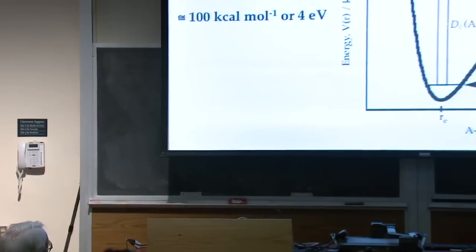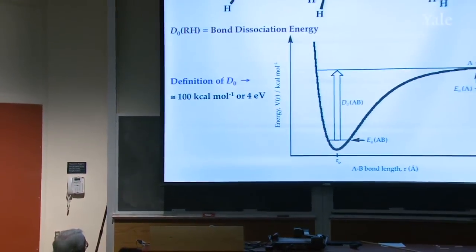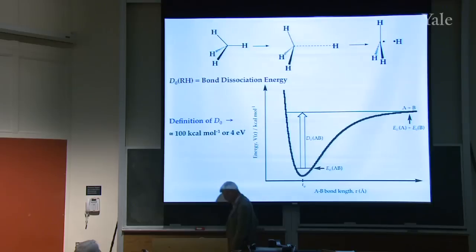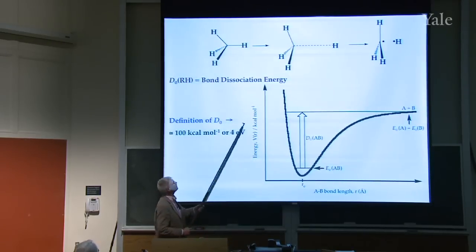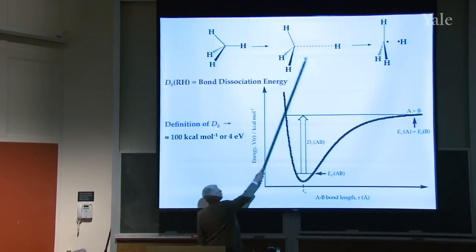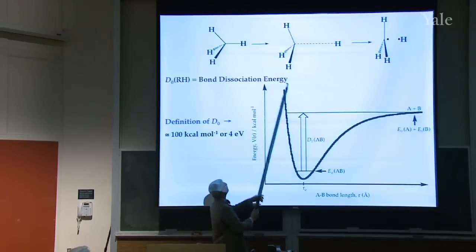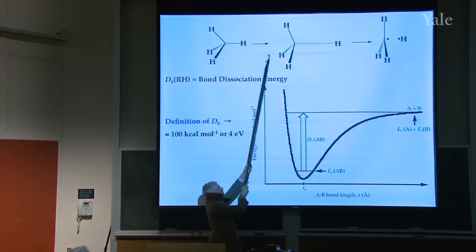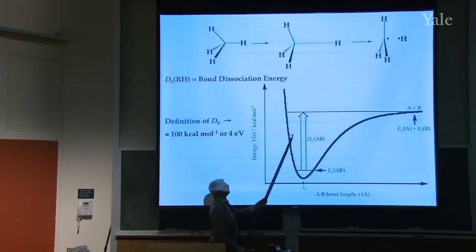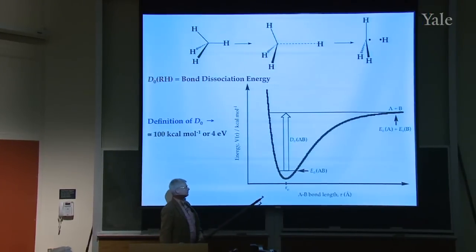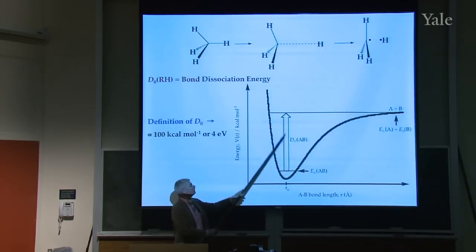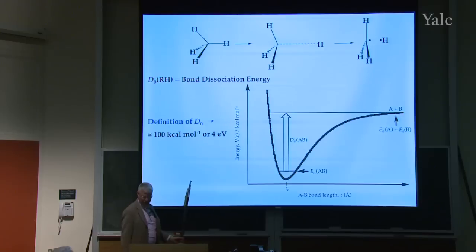If you have methane and you want to measure the bond energy, I literally want to reach in and measure the energy it would take to grab that hydrogen and rip it out of there. The molecule's going to have a change from a tetrahedral geometry to a flat geometry. There's a potential curve written as a Morse oscillator, and there's a zero point energy.